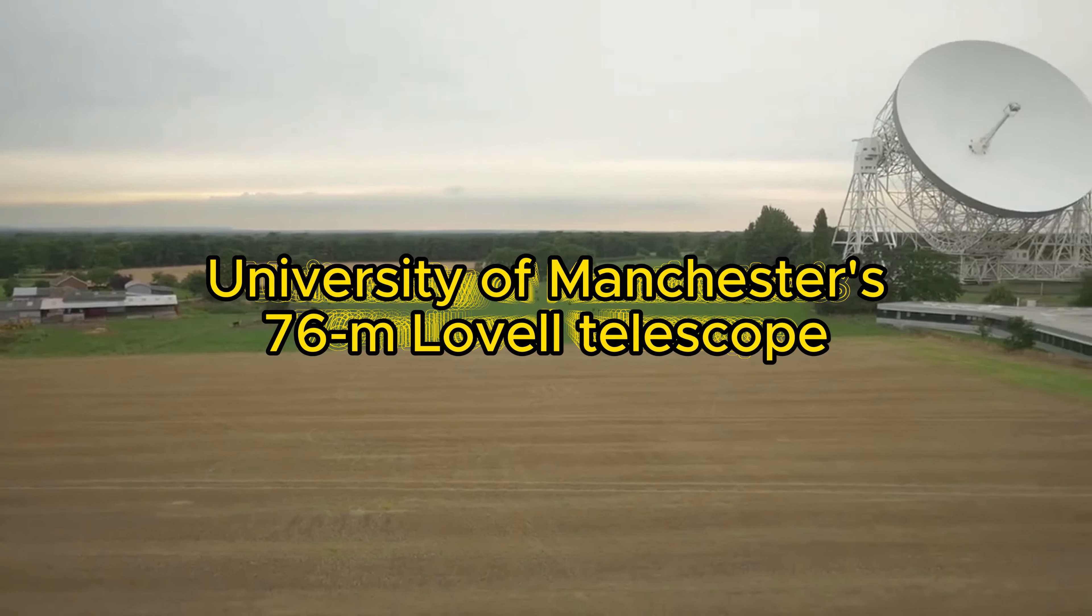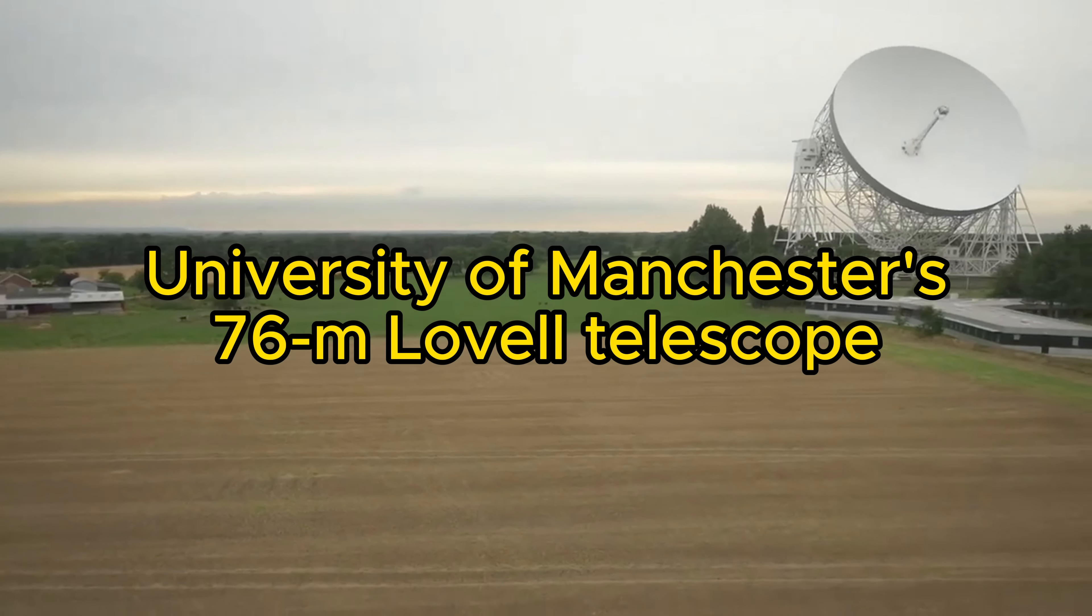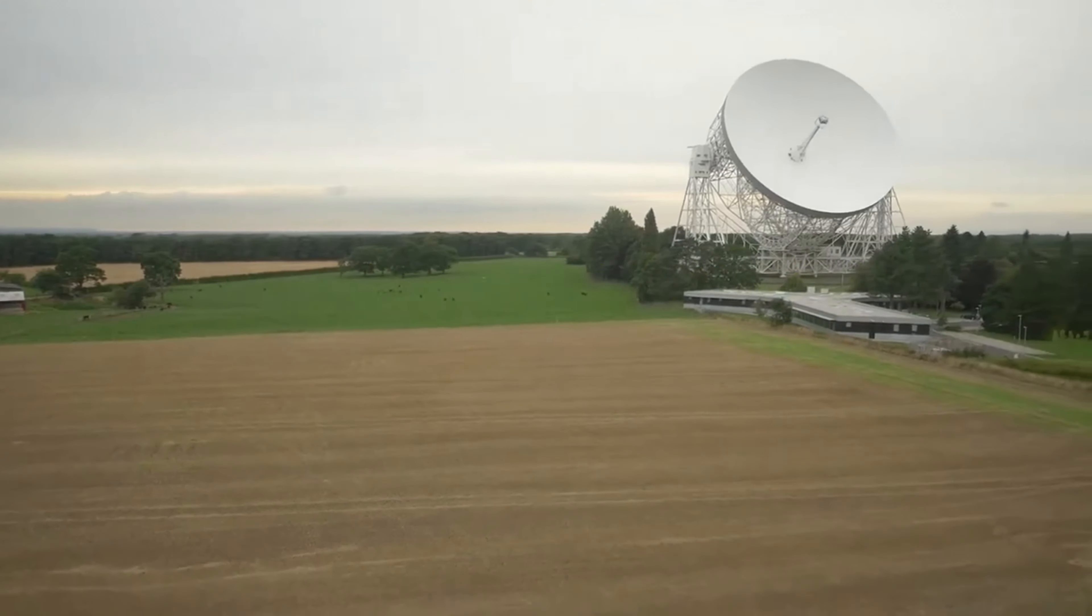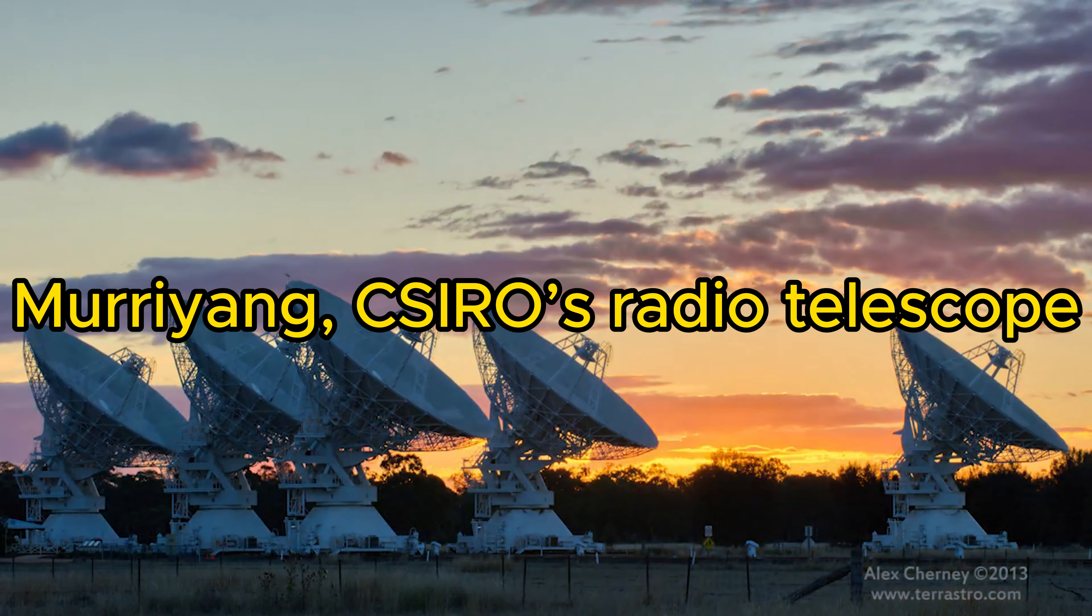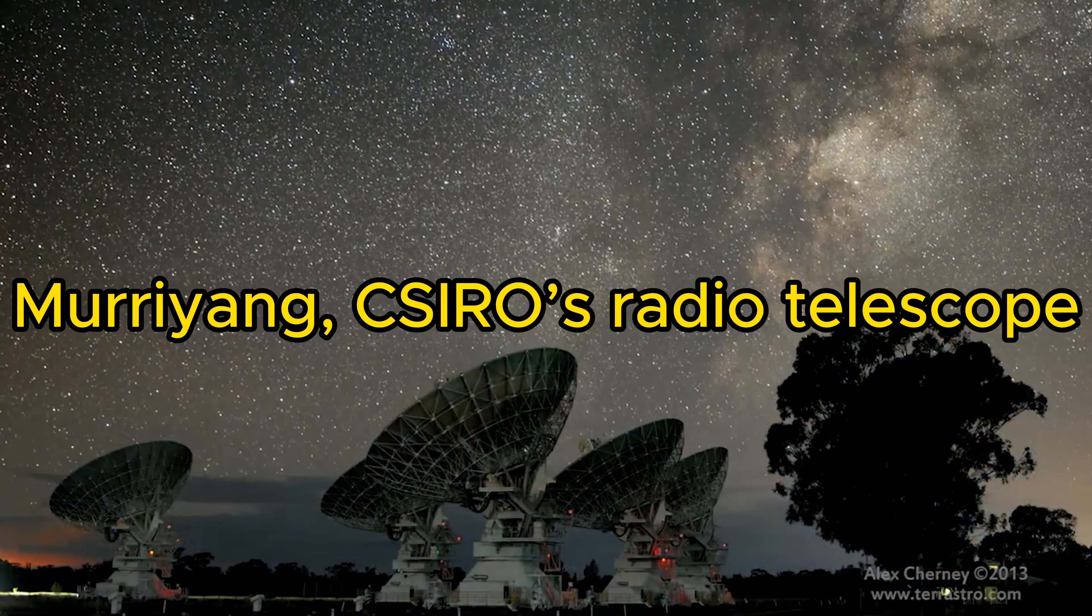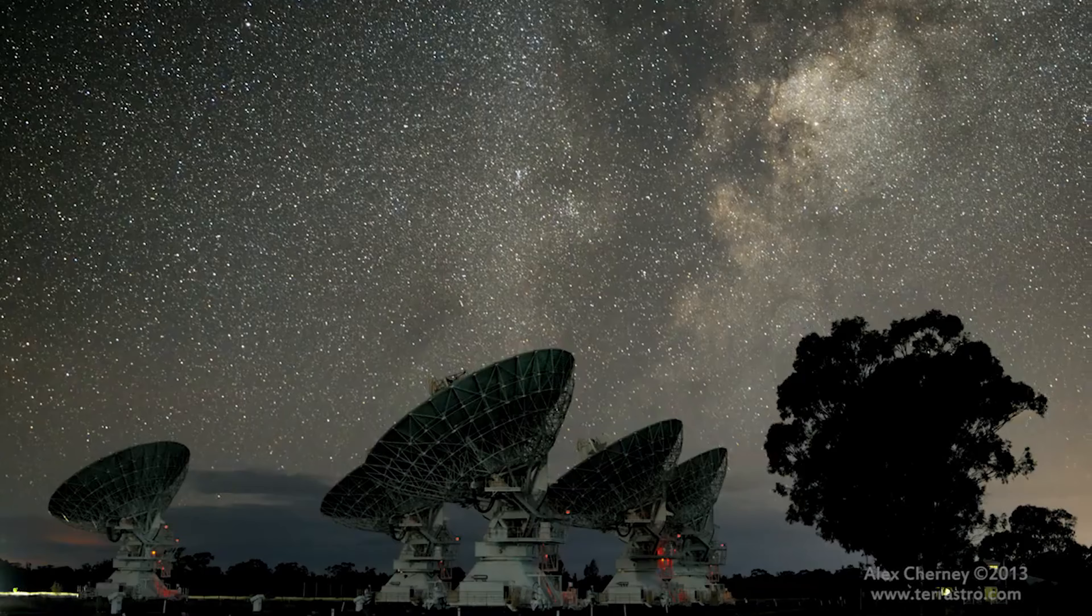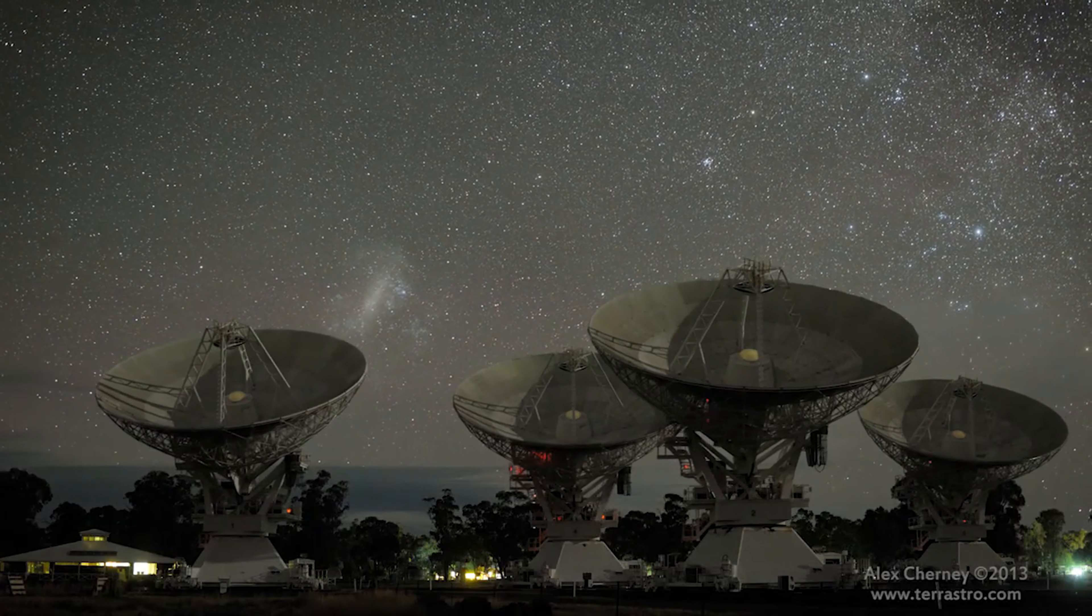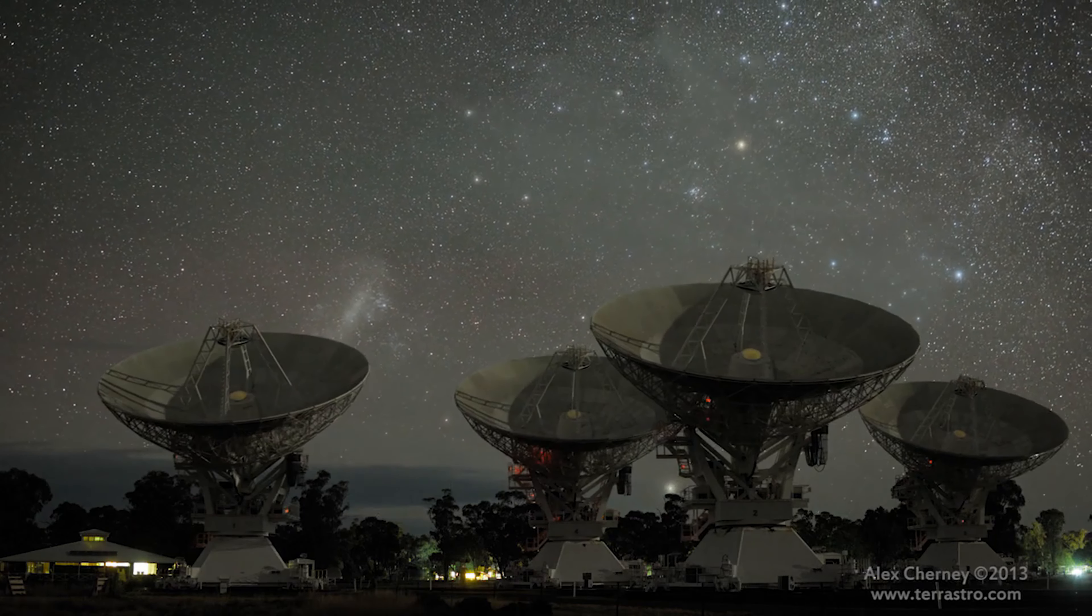In this case, the University of Manchester's 76-meter Lovell telescope at the Jodrell Bank Observatory and Murriyang CSIRO's radio telescope at Parkes, New South Wales, picked up the unique signature of XTEJ 1810-197's strange radio emissions.